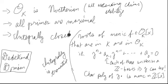OK is the collection of elements of K that are roots of monic polynomials with coefficients in Z. But what if instead we took elements in K that are roots of monic polynomials with coefficients not in Z, but in OK? That condition — which is a little stronger — actually guarantees that we're back in OK again: if our element is in K and is a root of a polynomial with coefficients in OK, it's also a root of a polynomial with coefficients in Z.